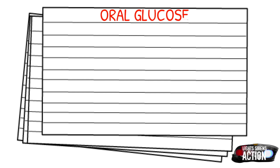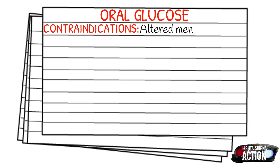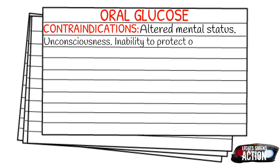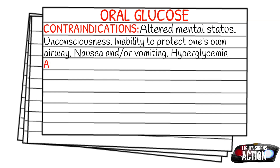Contraindications of oral glucose include altered mental status, unconsciousness, the inability to protect one's own airway, nausea and/or vomiting, and hyperglycemia. If your patient has an altered mental status or is in and out of consciousness, that makes it doubtful they can protect their own airway — which is why it's a contraindication. And for hyperglycemia, there's no reason to give somebody sugar who already has a high blood sugar level.